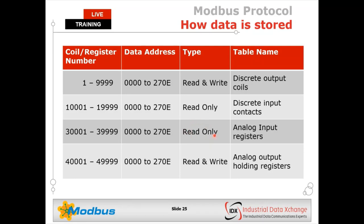Analog input registers are read-only — the controller can only read information stored in the IO device from the 30,000 table. Analog output holding registers allow the controller to both read and write information to devices. If you want to write a setpoint to a thermostat in the field, use an analog output holding register. To read temperature, use an analog input register. The information available within specific devices is specified in the Modbus user manual, which tells you which table stores which pieces of information.